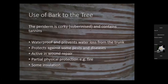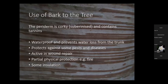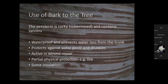Why does a tree have bark? The periderm, that outer bark, is corky and technically suberised — from 'suba,' the Latin for cork. It contains tannins which act against invasive species like fungi. It's dead and forms a waterproof cork area, preventing water loss from the trunk. It protects against some pests and diseases. The phelogen is very active in wound repair — if the bark does get wounded, it repairs. It also provides physical protection against fire and acts as insulation against cold and heat.